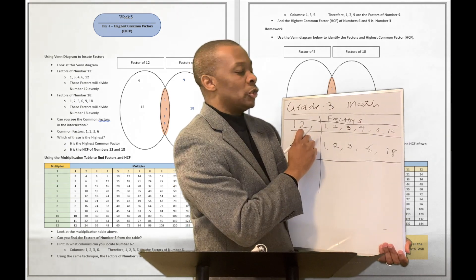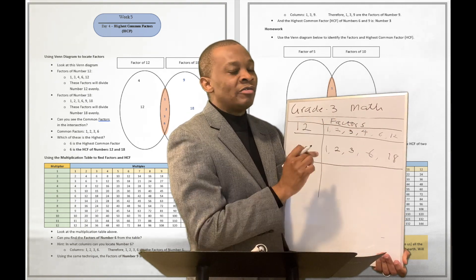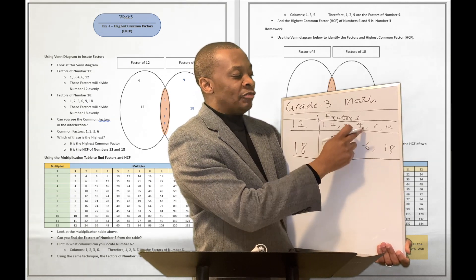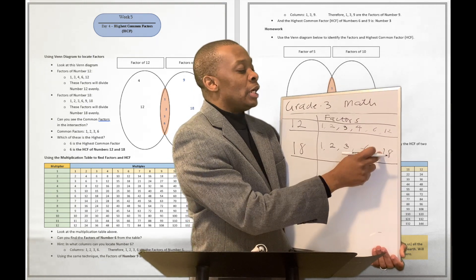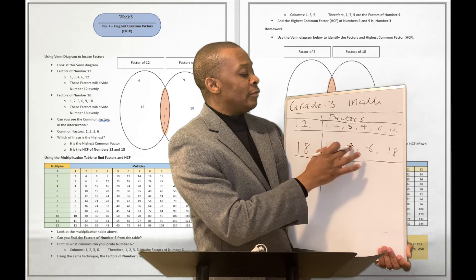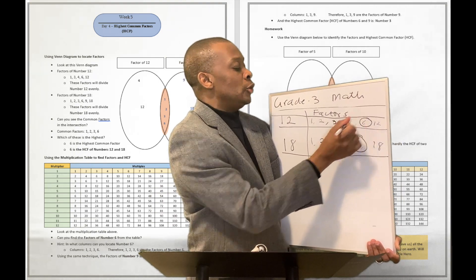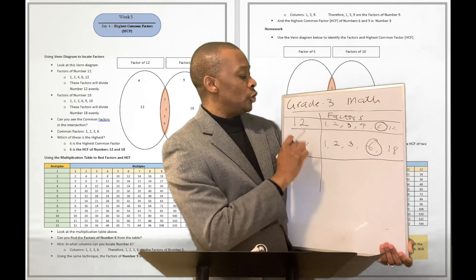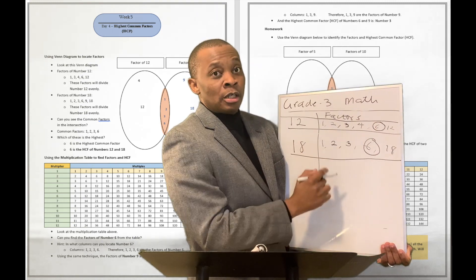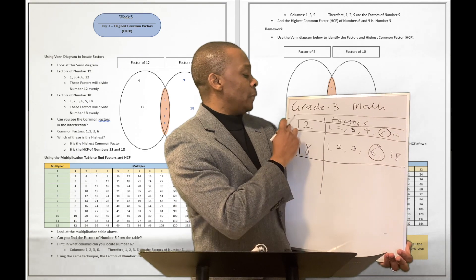Now, looking at all the factors of 12 and 18, we ask: which are the common factors and which is the highest common factor? Well, 1 is a common factor, 2 is a common factor, 3 is a common factor, and 6 is a common factor. However, 4 is not a common factor, 12 is not a common factor, and 18 is not a common factor between 12 and 18. So the common factors are 1, 2, 3, and 6. Out of those, the highest common factor is 6 — that is your HCF of 12 and 18.